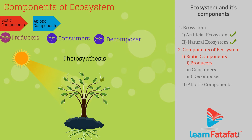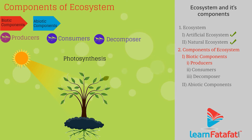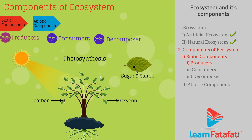Producers. The organisms that can prepare their own food by the process of photosynthesis are called producers — for example, plants and blue-green algae. Photosynthesis results in the production of sugar and starch from simple substances such as carbon, oxygen, and water in the presence of sunlight and chlorophyll.